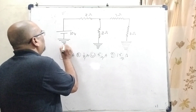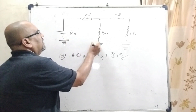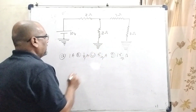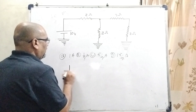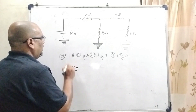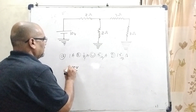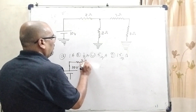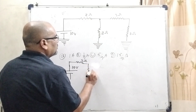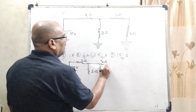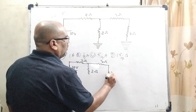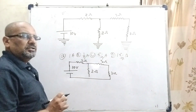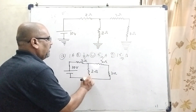Now, you can see that here all these terminals are earthed, which means they are at the same potential — zero potential. So we can redraw this circuit. This is 10 volt and this is the negative terminal, meaning low potential. This is 2 ohm, this is also 2 ohm, here 3 ohm, and again 3 ohm. Earth means zero potential, so we have redrawn this diagram.